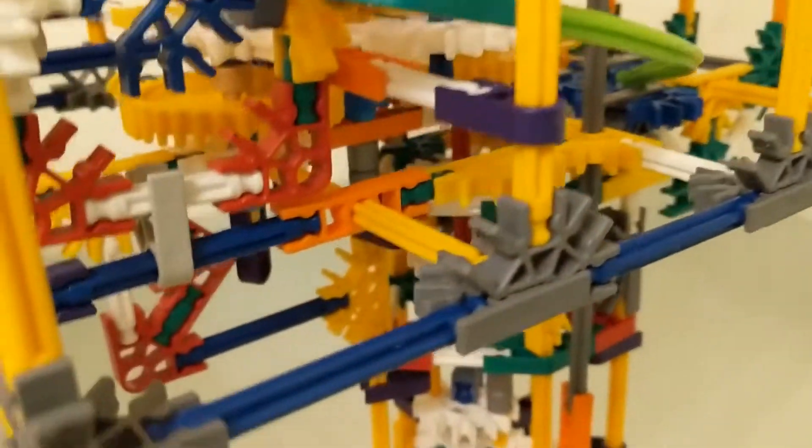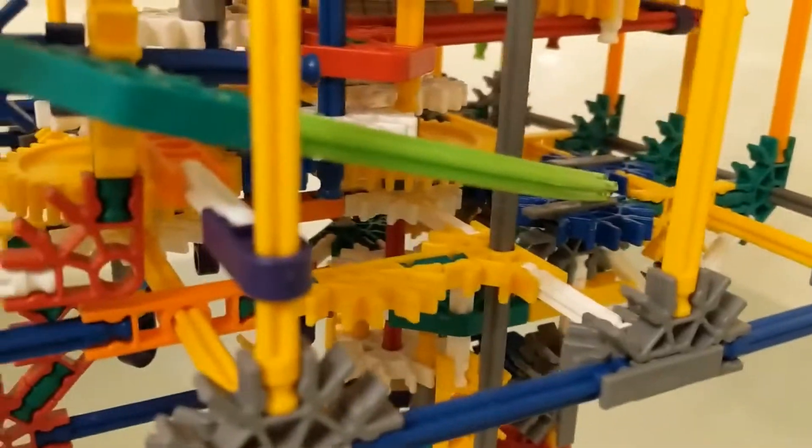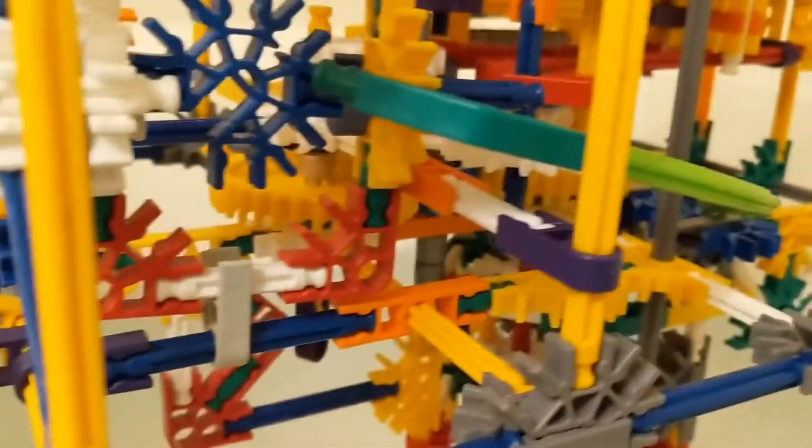Now we have some of the gearing down there. You can see the gears for the camshaft, and then the gears for the final shaft that goes down to the propeller shaft.